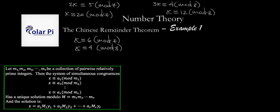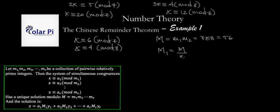Now we can apply the Chinese Remainder Theorem. First, find capital M: the product of m_1 and m_2, so 7 × 8 = 56. Then capital M sub 1 = 56 ÷ 7 = 8 (leave out m_1, multiply the rest). And capital M sub 2 = 56 ÷ 8 = 7.